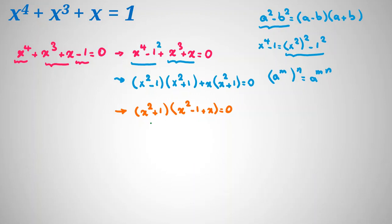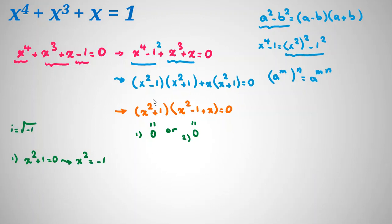In the first case, x squared plus 1 equal to 0. In real numbers we don't have any answer. But in complex numbers, since i equals the square root of negative 1, x squared equals negative 1, so x equals plus or minus the square root of negative 1, which by definition equals plus or minus i. So in the first case we have no real answers, but in complex numbers we have plus or minus i.